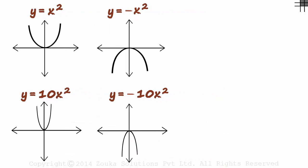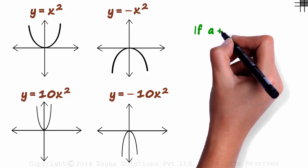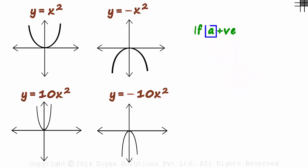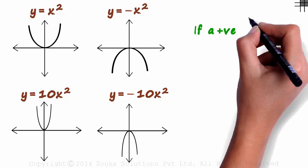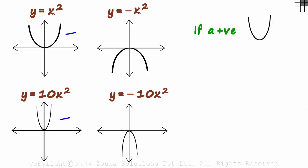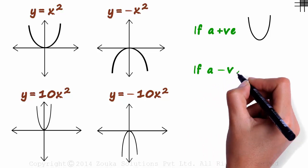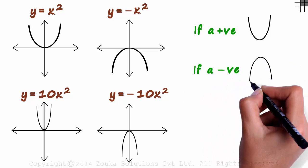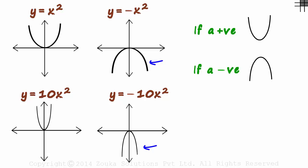Let's summarize all that we saw. If a is positive—by a, I mean the coefficient of x²—if a is positive, the graph always opens upwards as in these two cases where a is positive. And if a is negative, then the graph will open downwards, as in these two cases.